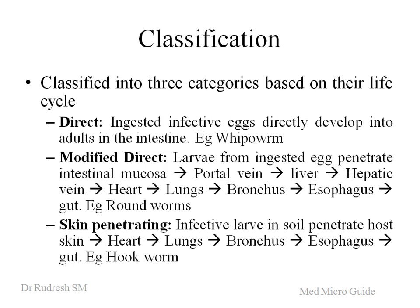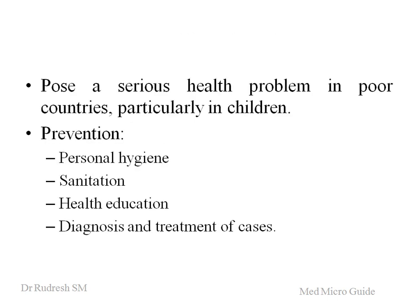Another method of life cycle is skin penetration. Here the infective larvae in the soil penetrate the whole skin, then through the venous circulation they reach the right part of the heart and then the lungs. Again they reach the bronchus, esophagus, and ultimately reach the gut to form the adult worm. The example is hookworm.